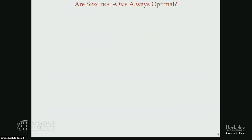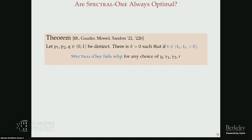The next question is: are Spectral-1 algorithms always optimal? It turns out those were the only two successful cases. In any other case, Spectral-1 algorithms will not be optimal — sufficiently close to the information-theoretic threshold, they don't work regardless of the choice of parameters.